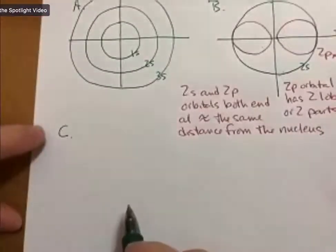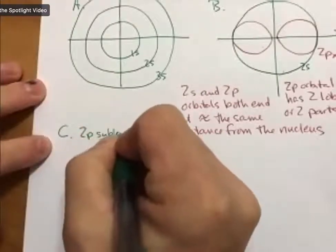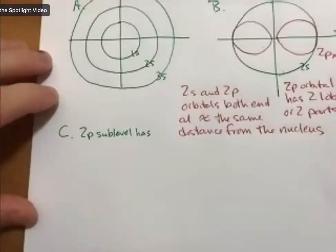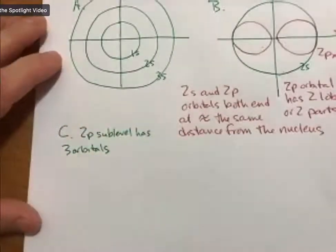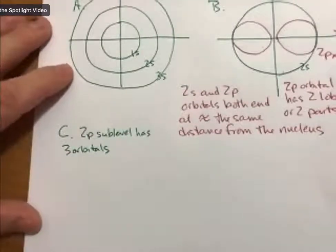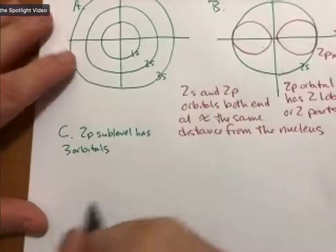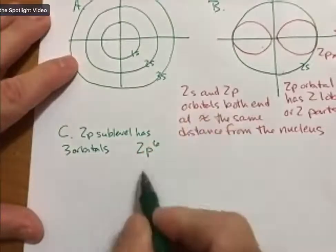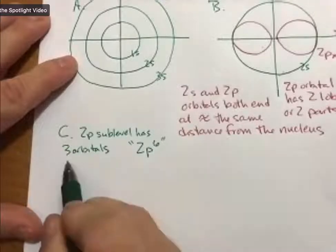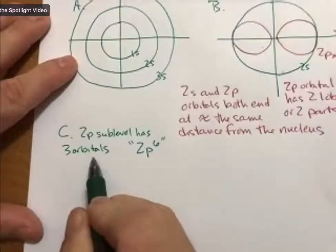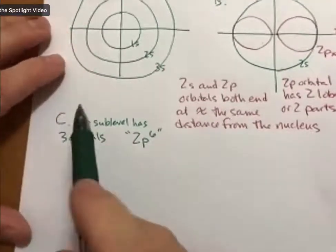Just to remind you, the 2p sublevel has three orbitals, and each orbital holds two electrons, so for a total of six electrons. When we do our electron configurations, it will actually write 2P6. That'll be the 2p sublevel with three orbitals, each orbital holding two electrons for a max of six electrons. Anyway, so now let me actually answer this question.